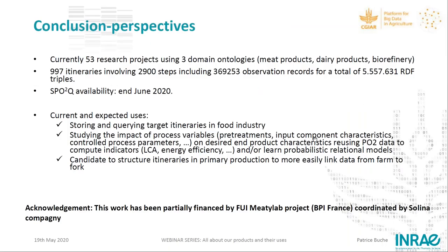Currently we have 33 research projects in our database using three domain ontologies. You saw an example about meat products, but we also have data about dairy products and biorefinery — around 1,000 itineraries involving around 3,000 steps. The SPARKT querying tool will be available very soon, in June 2020.